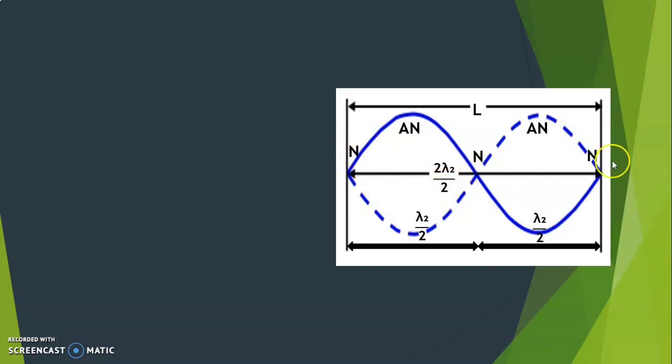Here we get three nodes and two antinodes. The length of the wire will be L. Therefore, here we have L equals 2 lambda 2 by 2, which implies lambda 2 equals 2L by 2.